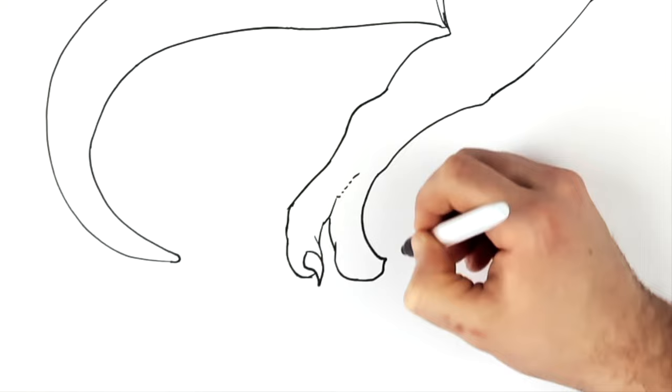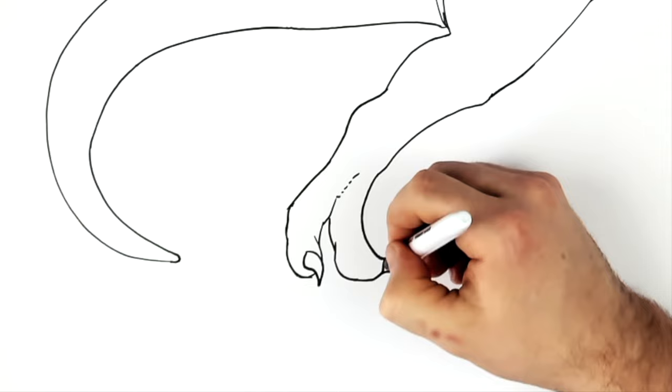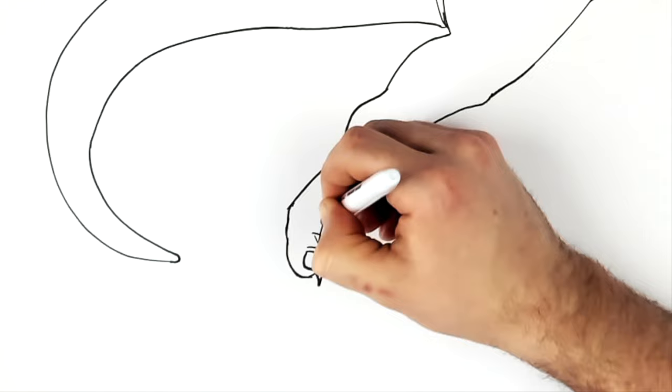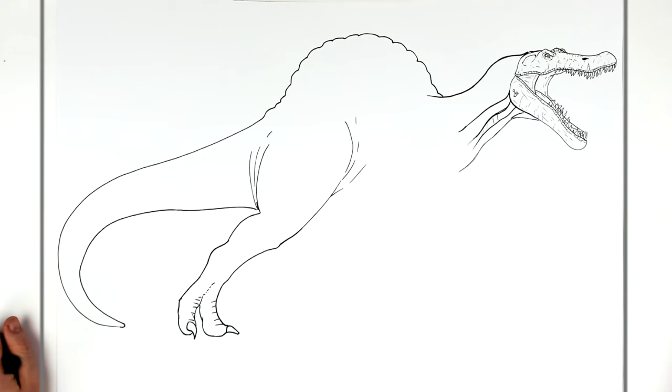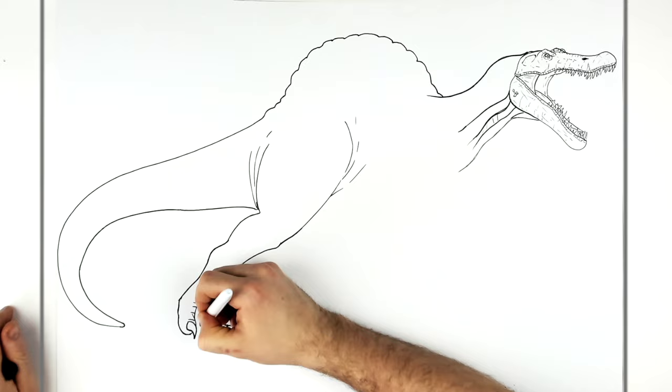And then this toe sort of scoots up around this way, and then the claw at the front just sticks out here. Like skin lines on the front of the toe. So we can kind of only see two toes really on that foot, probably only two on the other.